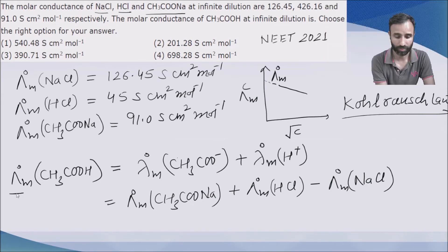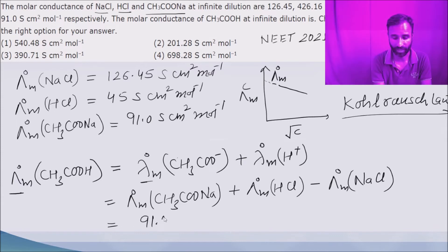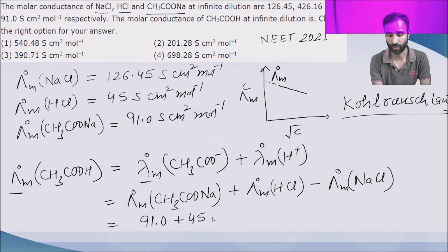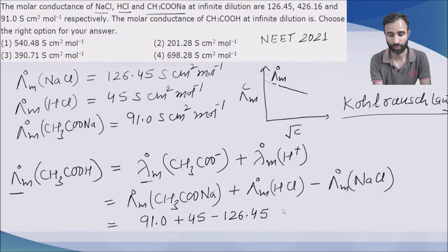See, this is for electrolyte, capital lambda, and this one is small lambda for ions. So what is the contribution of sodium acetate? 91.0. For HCl is 45 and for NaCl it is 126.45.